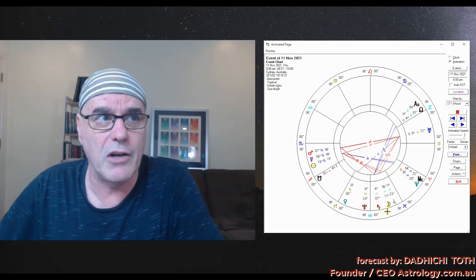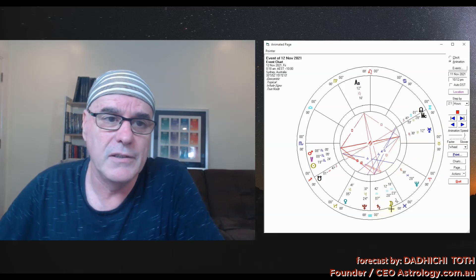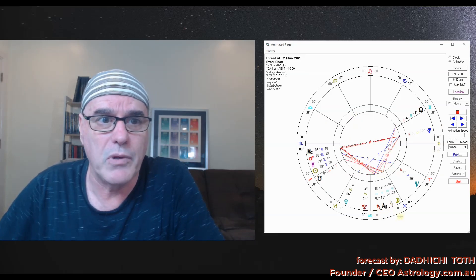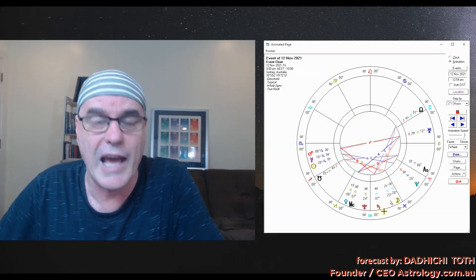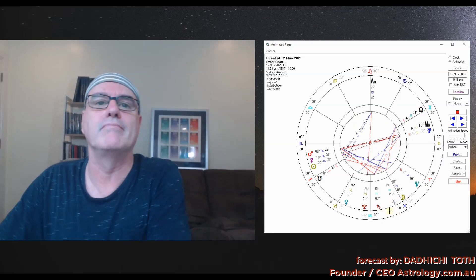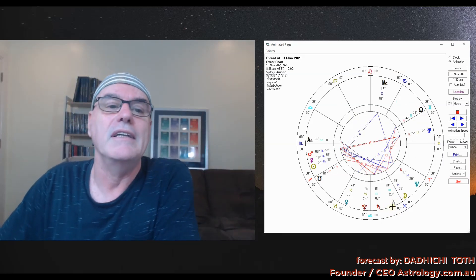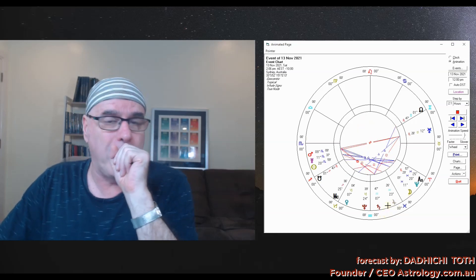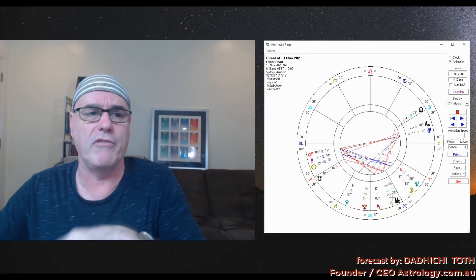Notice here around the 10th and 11th, the to and fro energies in your domestic sphere with the moon transiting firstly Saturn, then Jupiter. This is a roller coaster ride for you in terms of your family affairs.